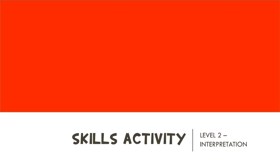Okay, so now that we have completed the examples and you know how to identify and answer a Level 2 interpretation question, I want you to practice by yourself. You are going to download the attached activity and take a few minutes to complete it. Make sure that you follow the instructions very carefully. Press pause on this video, complete the activity, and when you are done, unpause the video and we will mark the activity together.